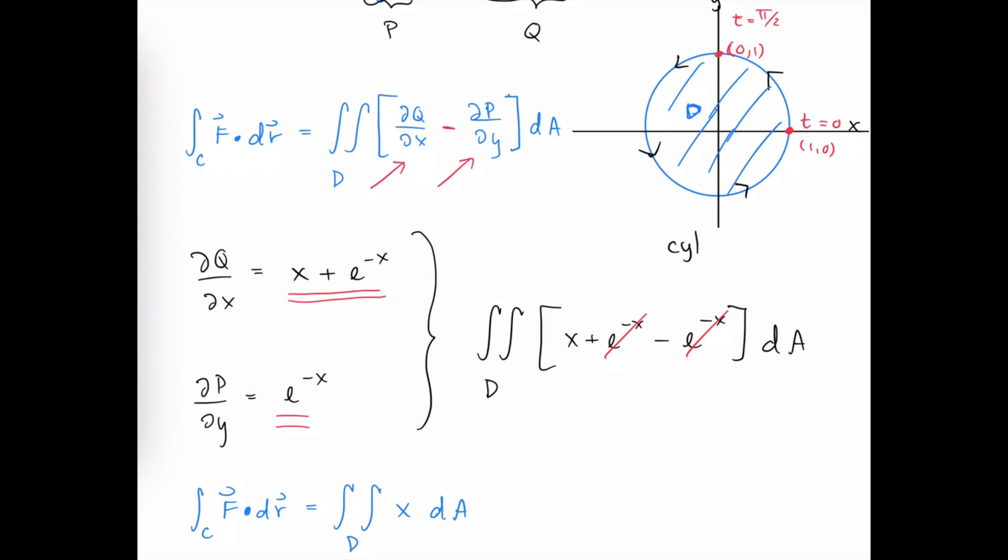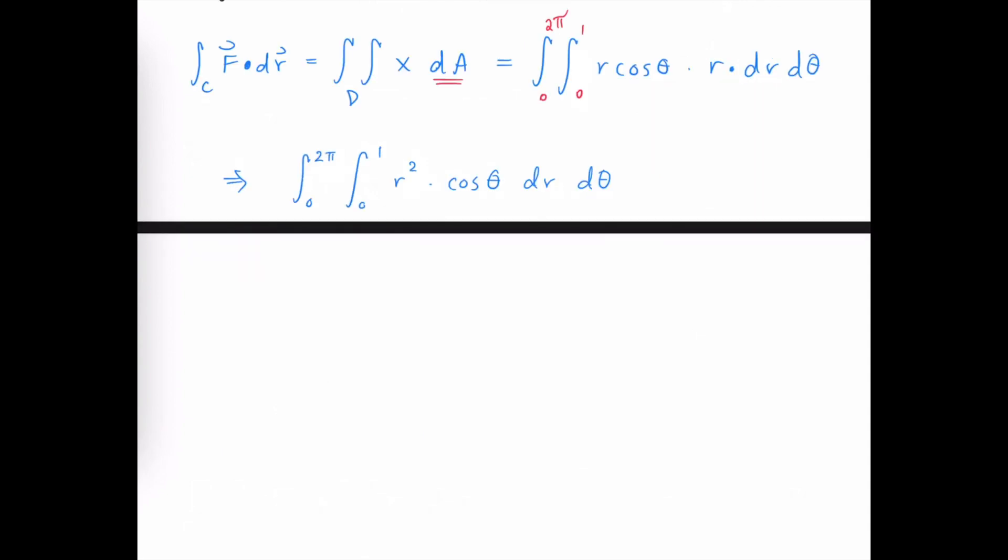And since the domain region D that we're integrating over is a circle, it would be easier to use cylindrical coordinates to evaluate this integral. To convert this rectangular integrand into cylindrical coordinates, we'll substitute r cos theta for the x, and our dA quantity requires us to pick up a factor of r, and then it looks like dr d theta is a perfectly fine order to choose. Envisioning the tiny polar rectangle in our domain region, we could integrate with respect to r first, and r goes from 0 to 1. And then we sweep this all the way around to say that the value of theta goes from 0 to 2 pi. And now we're evaluating a pretty straightforward double integral with constant limits of integration.